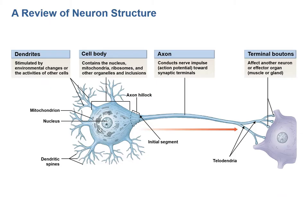Now that we've covered the structural organization of the nervous system, we can talk about the cells of the nervous system. The nervous system is composed of two types of cells: neurons, known as nerve cells, whose function is to conduct electrical signals, and glial cells, which are support cells that support the neurons in performing their function.